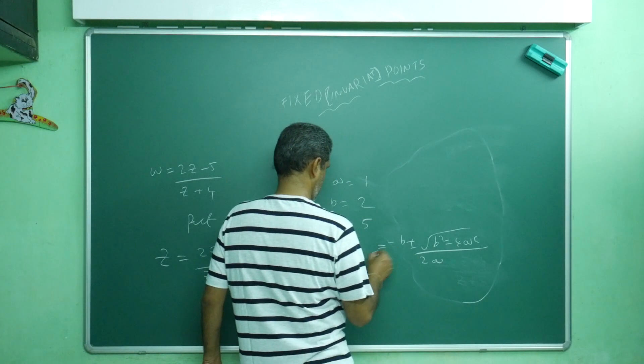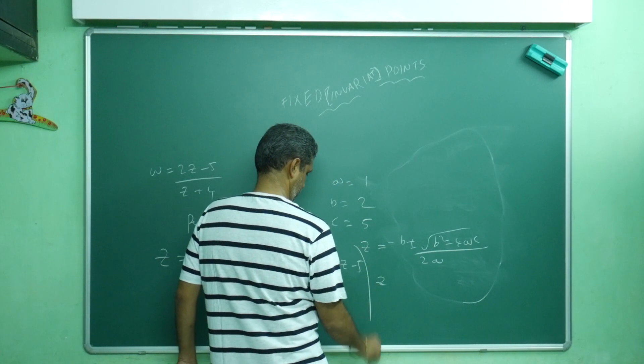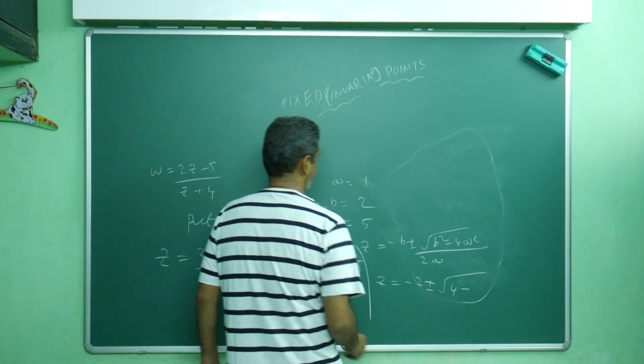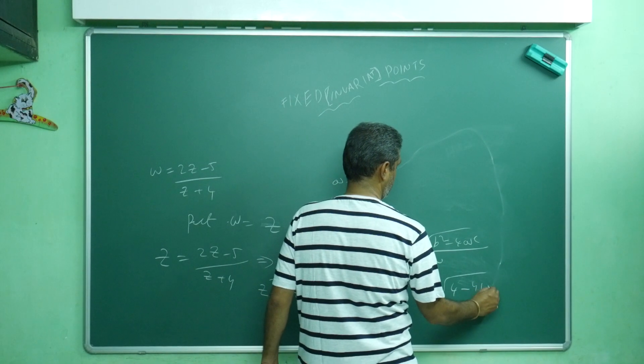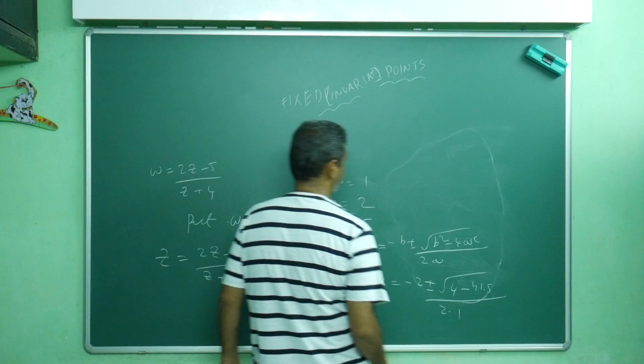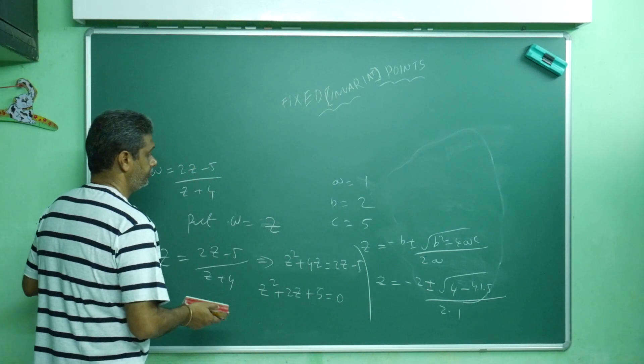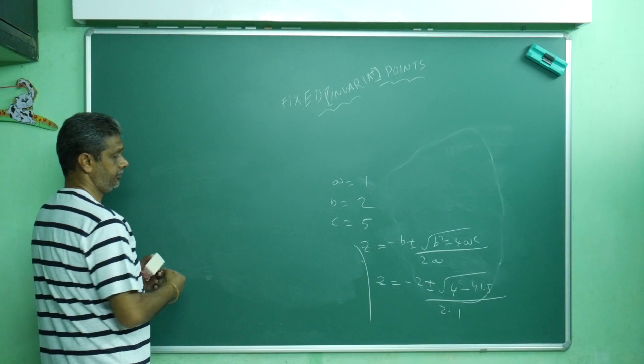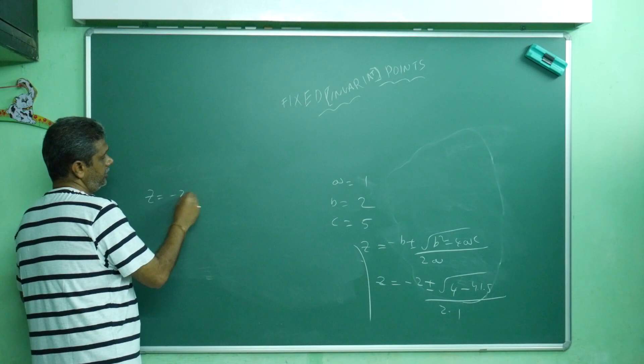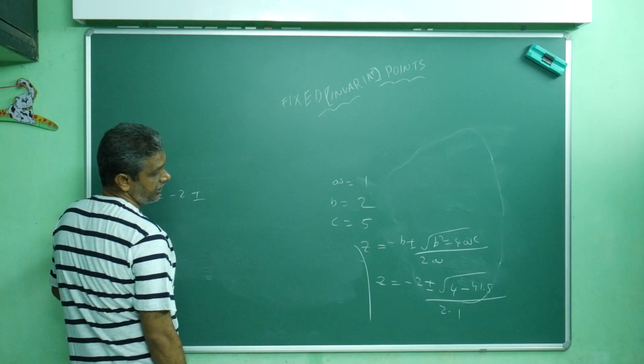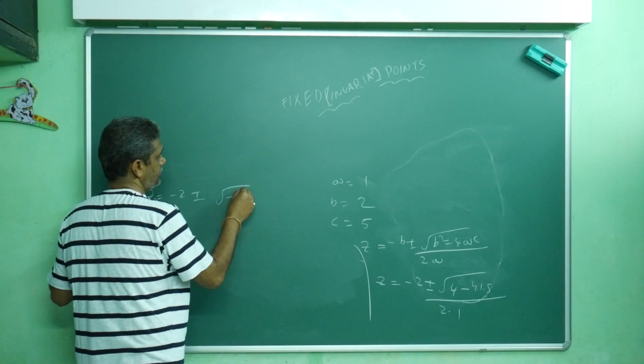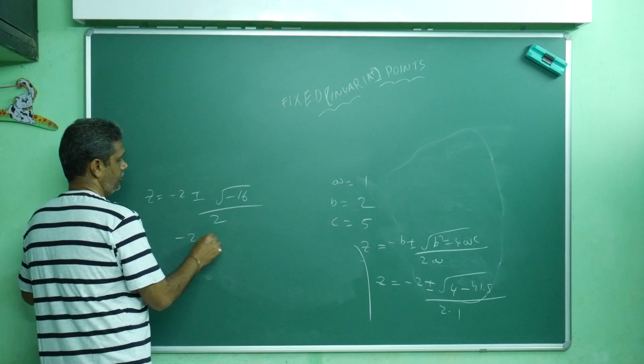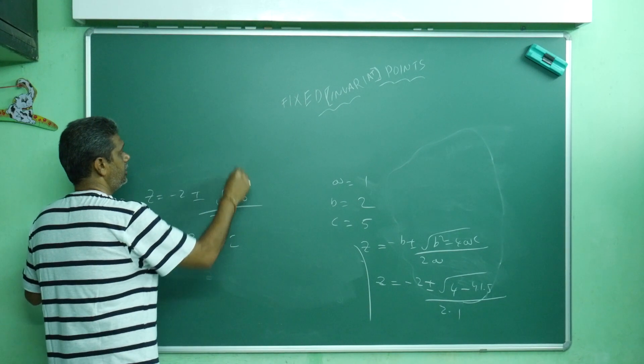Using the formula: z equals minus b plus or minus square root of b squared minus 4ac divided by 2a. This equals minus 2 plus or minus square root of 4 minus 4 times 1 times 5, divided by 2 times 1. So z equals minus 2 plus or minus square root of 4 minus 20, which is minus 2 plus or minus square root of minus 16, divided by 2.